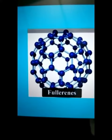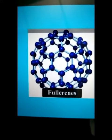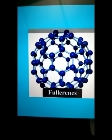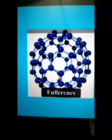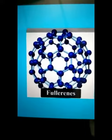Fullerene is another class of Carbon allotropes which have Carbon atoms arranged in the shape of a football. Since this looks like a geodesic dome, it was named after the US architect Buckminster Fuller. The molecule is named as Fullerene.